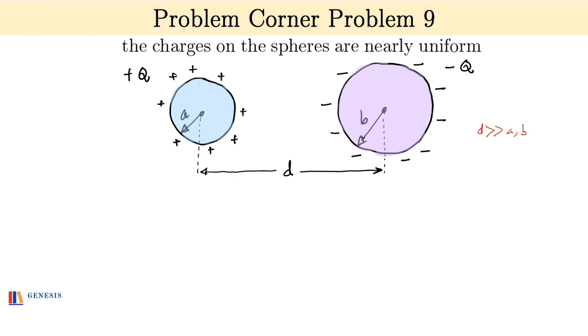So that we can assume the charges on the spheres are nearly uniform. This is very important because only under this condition will we be able to write the potential of the spheres.